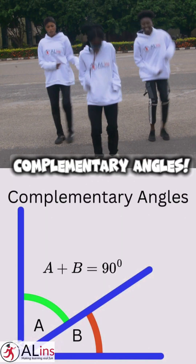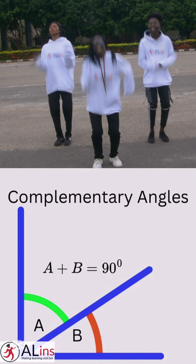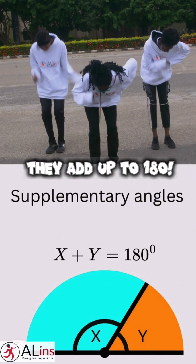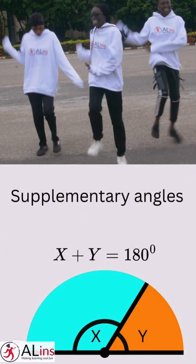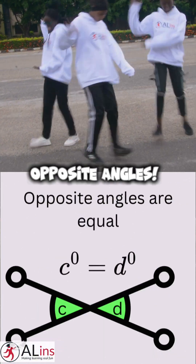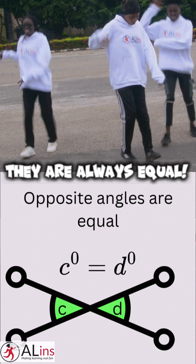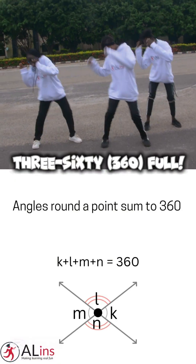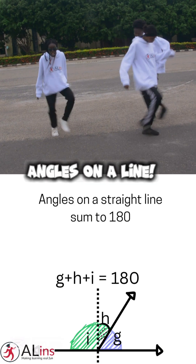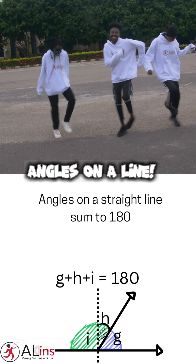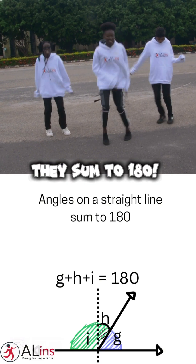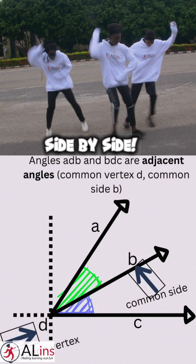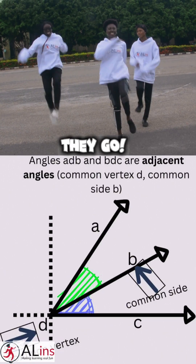Complementary angles, they add up to 90. Supplementary angles, they add up to 180. Opposite angles, they are always equal. Angles round a point, 360. Angles on a line, they sum to 180. Adjacent angles, side by side they go.